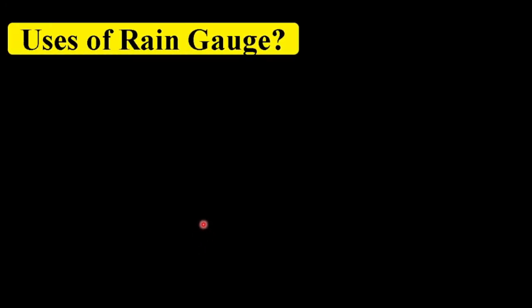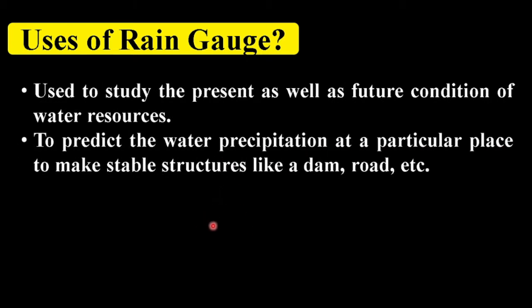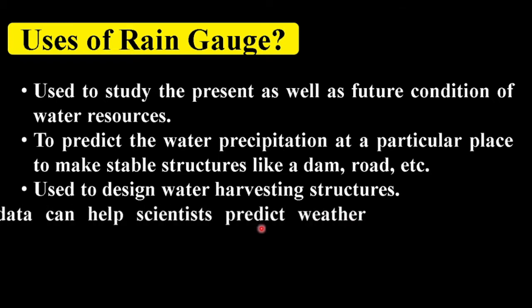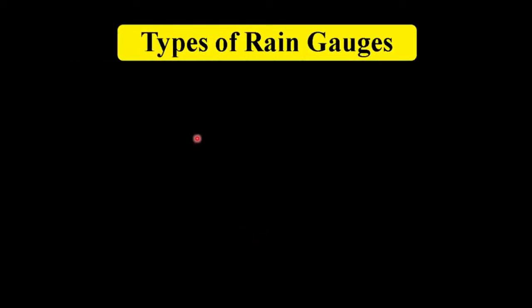Now, what are the uses of a rain gauge? It is used to study the condition of water resources, to predict water precipitation at a particular place so that structures like dams and roads can be built, and it is used in designing water harvesting structures. The long-term data obtained from the rain gauge can also help scientists in predicting weather patterns.